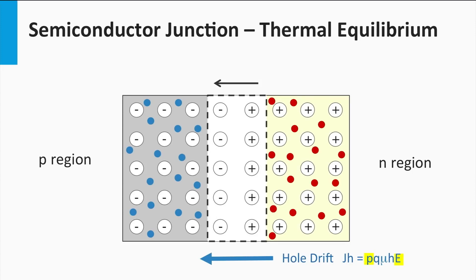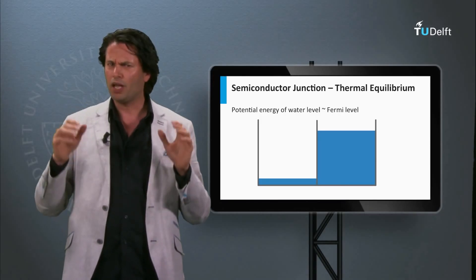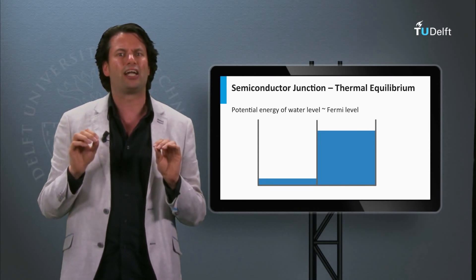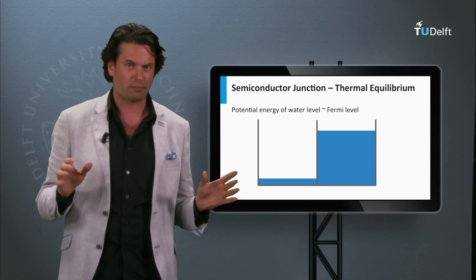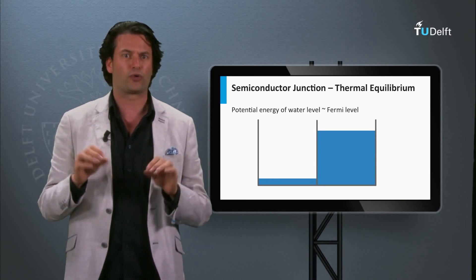In this example, the p-n junction is in thermal equilibrium, and the current density at the depletion zone is in equilibrium. If you connect the left side of the p-region and the right side of the n-region with an electrical circuit, no current would flow. The electrical field creates a built-in voltage over the space charge region. In a p-n junction in thermal equilibrium, the Fermi level is constant across the entire junction.